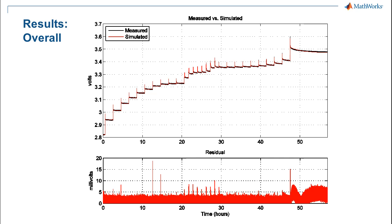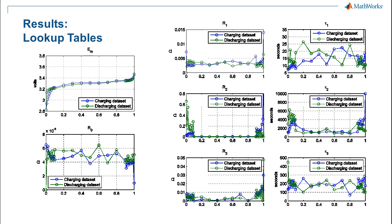The charging data fit even better with just the normal 3RC model. There were only three pulses where the transient residual exceeded 10 millivolts for a sample or two. Here you can see the resulting lookup tables we created for this battery at one temperature and current level. Now I'll hand it back to Robin to discuss our conclusions.